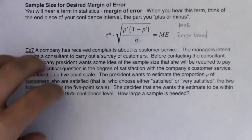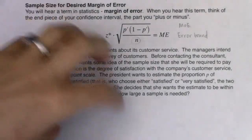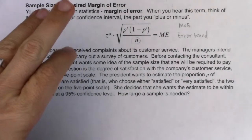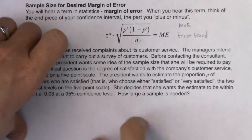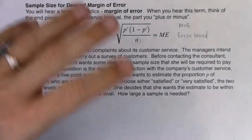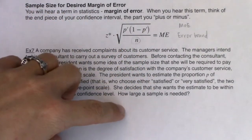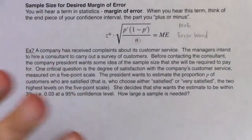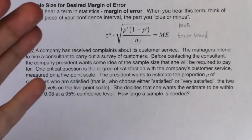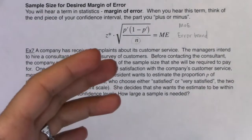As we read through example seven, I want us to listen for what land we're in. You might know even just getting started that we're going to be in proportion land, because I haven't even talked about mean land yet. But I want us to look forward — when we get to the end of this chapter, we need ways of identifying which land we're in. If the variable is categorical, we're in proportion land. If it's numerical, we're in mean land.